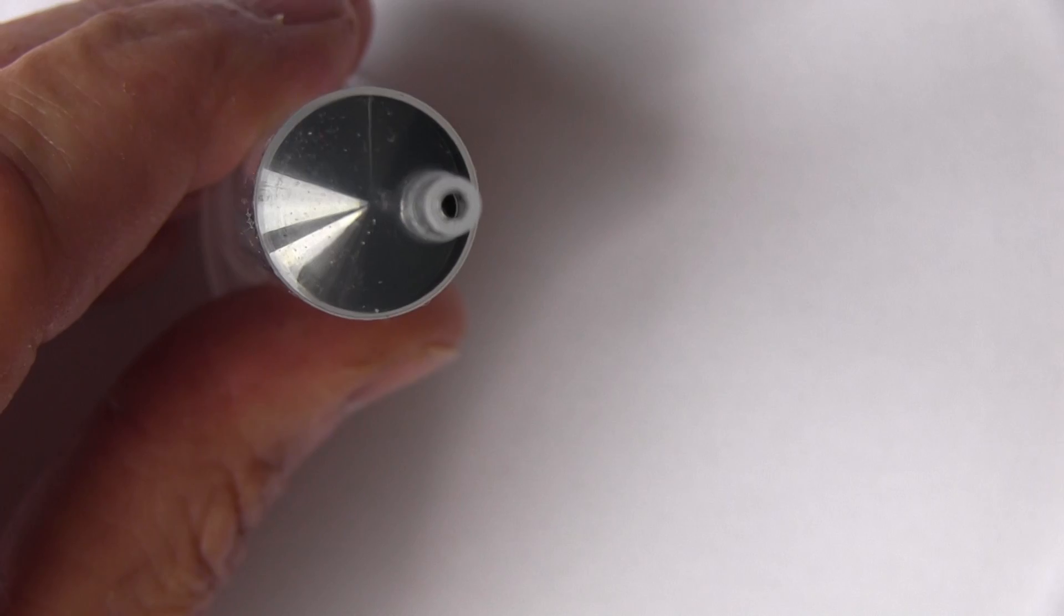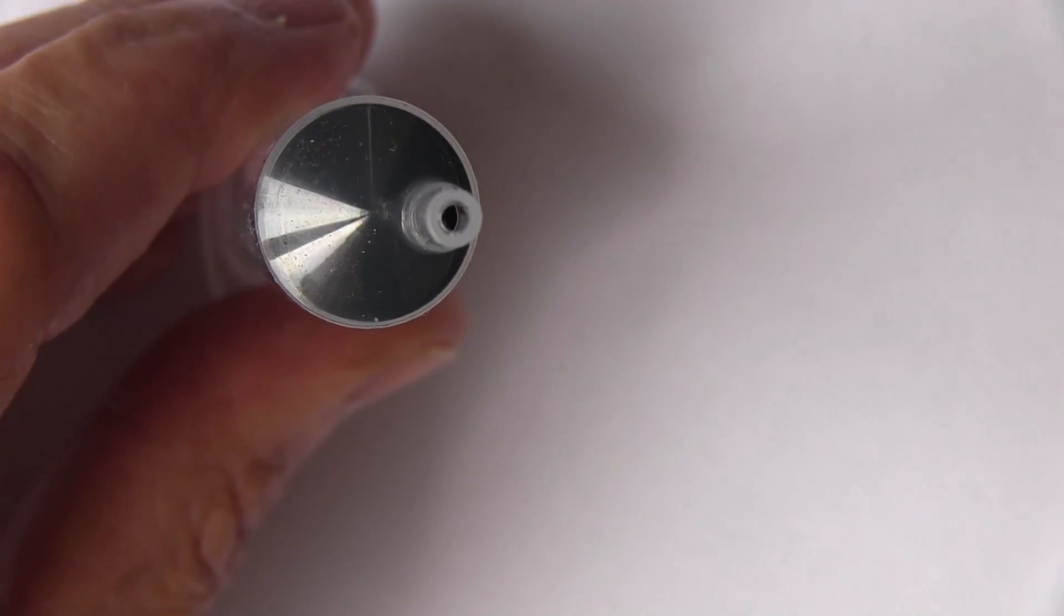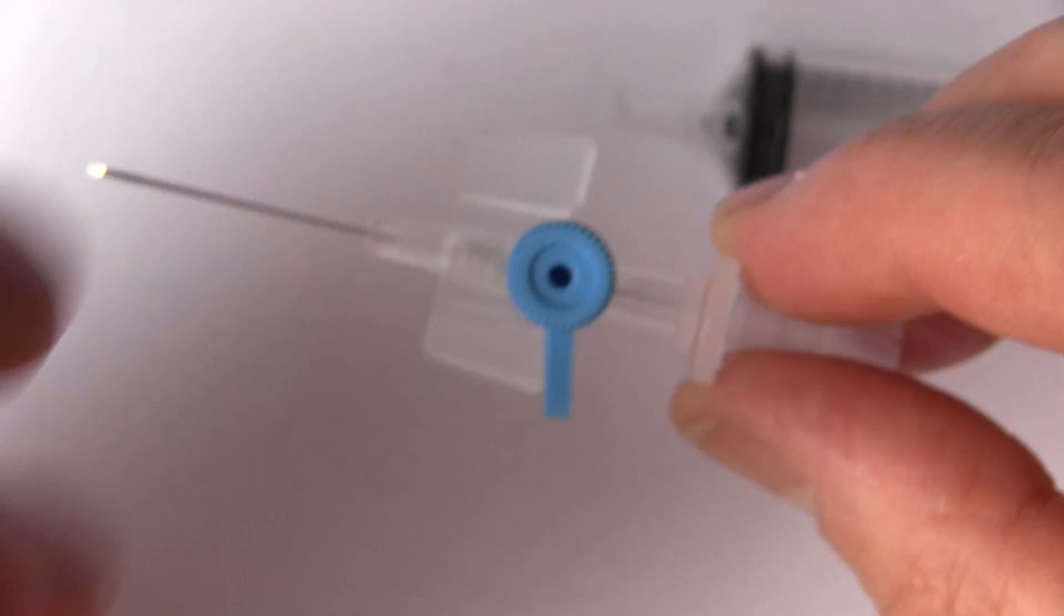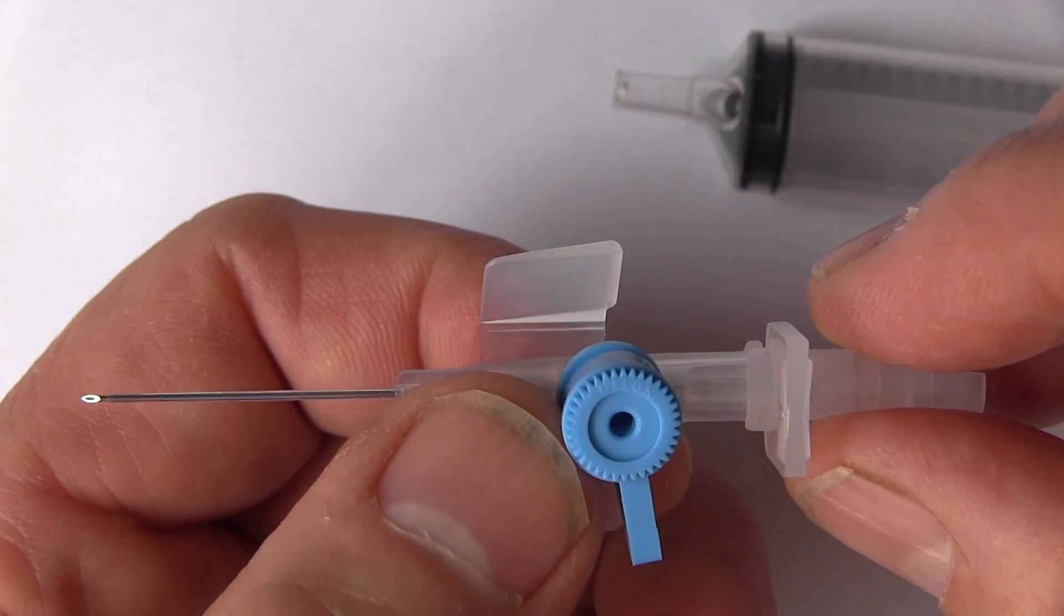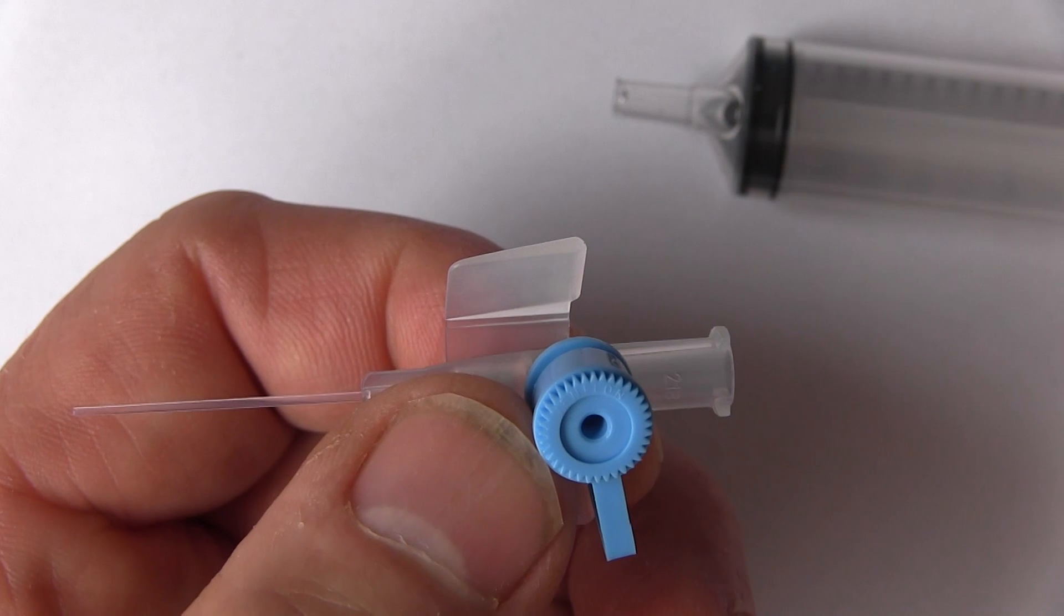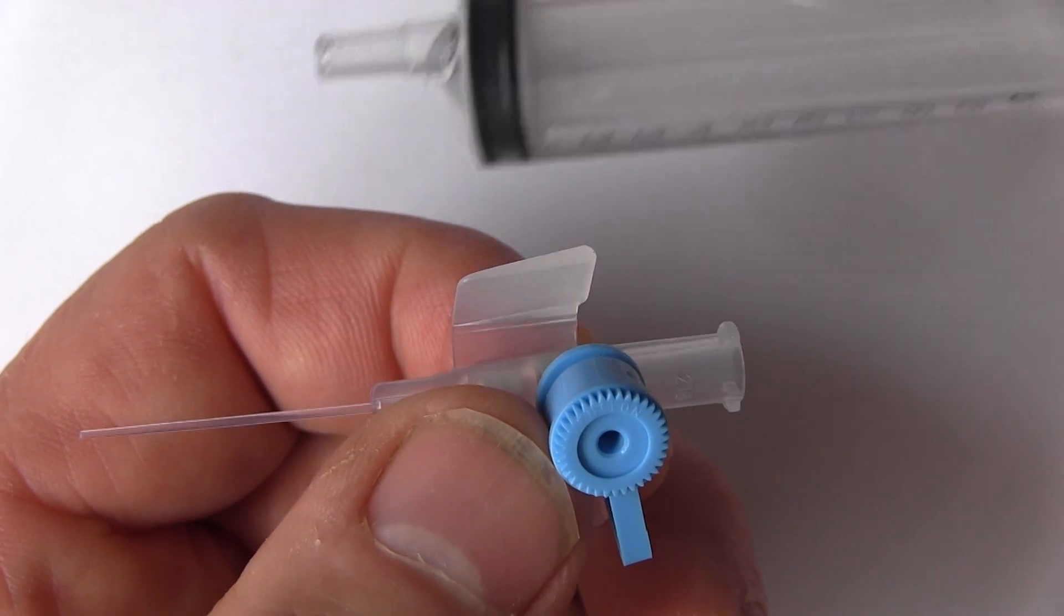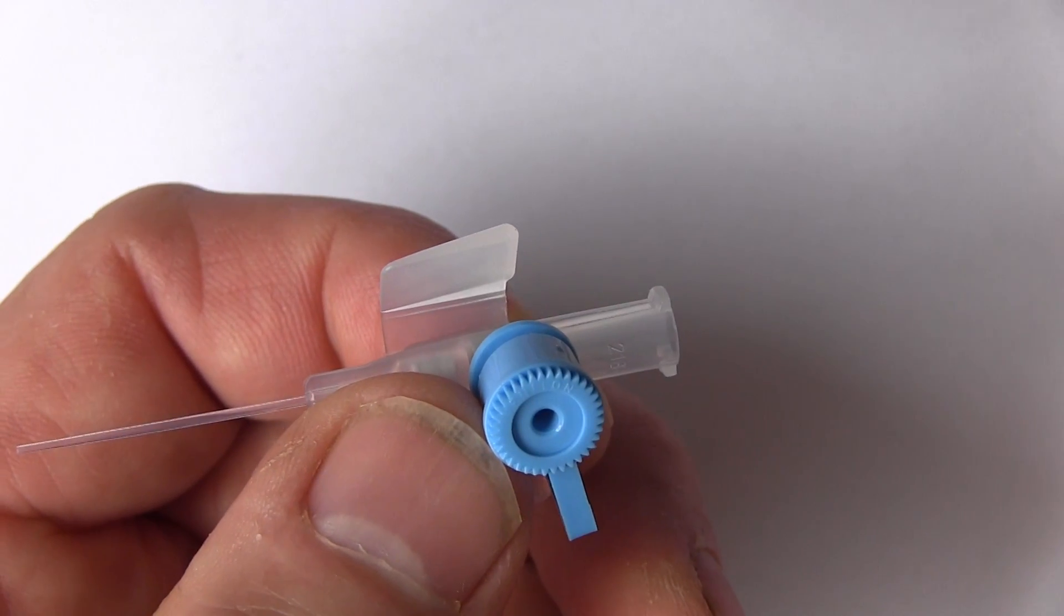Well let's suppose we're giving intravenous injections today. Here we have a giving device, and we notice there's a metal trocar inside which we can remove, and we have a drug here to give intravenously drawn up in this syringe.